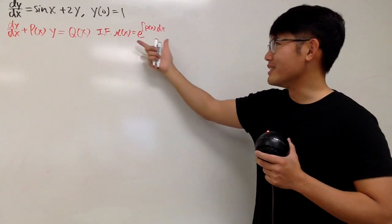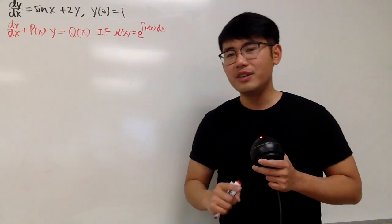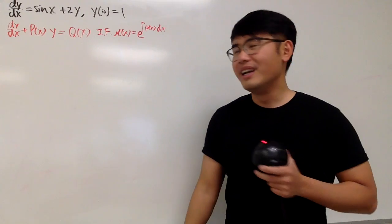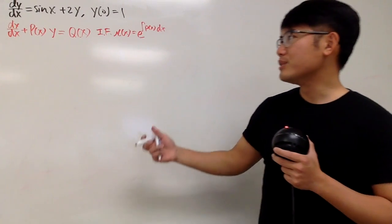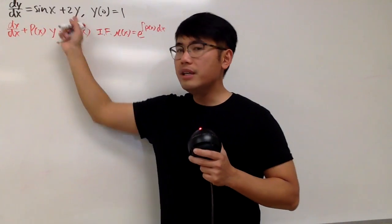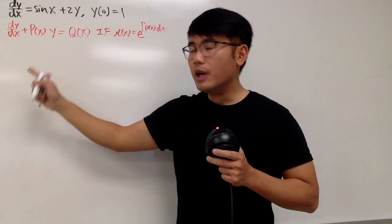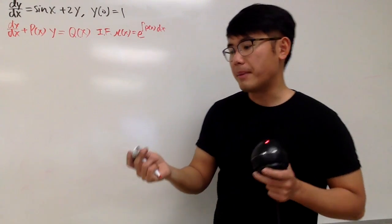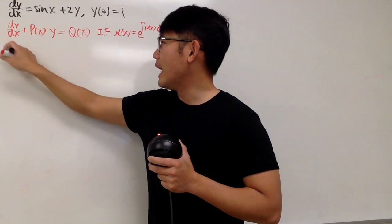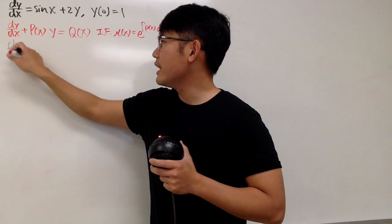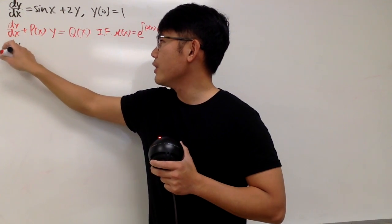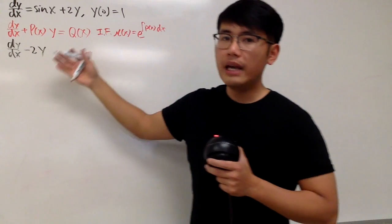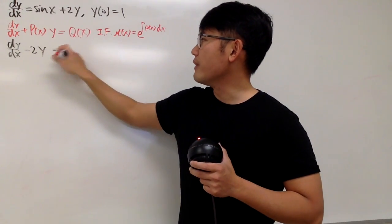To see why this is true, be sure to check out my other video — I'll have the link in the description. Now, in order to put this into that form, we just have to bring the 2y to the other side, which is not that bad at all. So we will have dy/dx minus 2y, and this is equal to sin x.